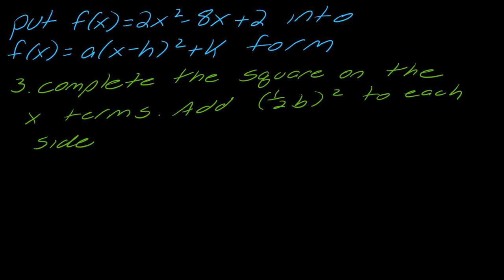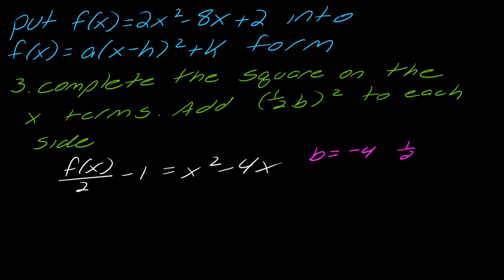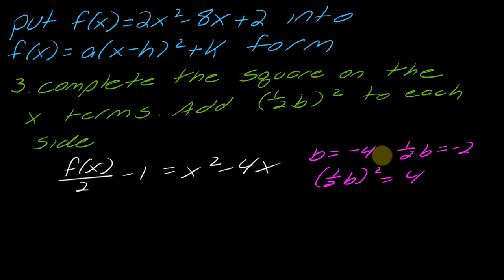Now I want to complete the square on each side. My b in this case is negative four. Therefore my half-b is negative two. And therefore my half-b squared is four. If you have no idea what I'm doing and need a refresher on completing the square, I will drop a link to that video in the description. So I want to add this half-b-squared value of four to both sides.